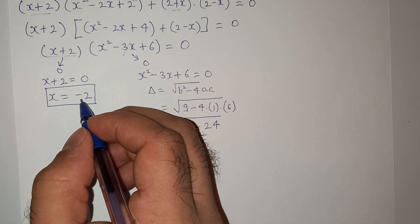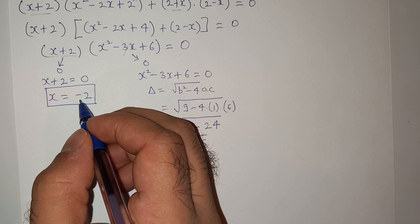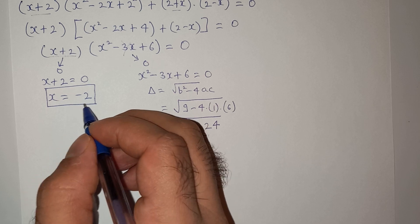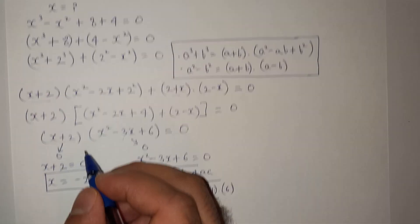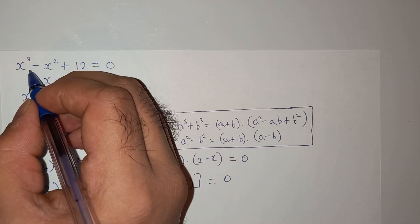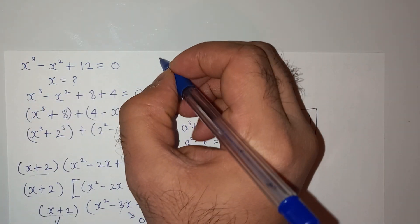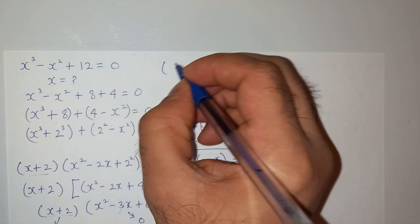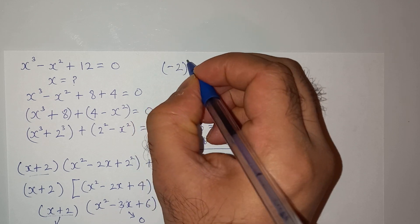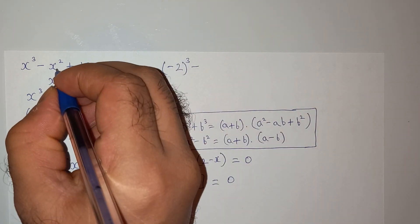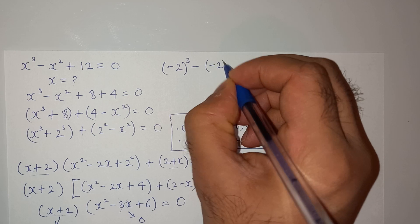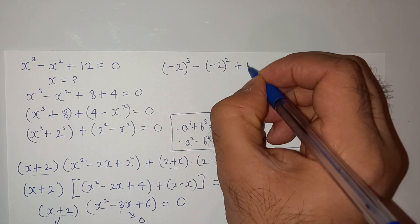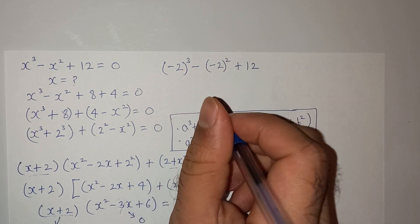And now we are going to put this in the original equation to see that we are right or wrong. So the original question is this, and we will put minus 2 in this. So x cubed means (minus 2) cubed minus x squared (minus 2) squared plus 12 should be equals to 0.